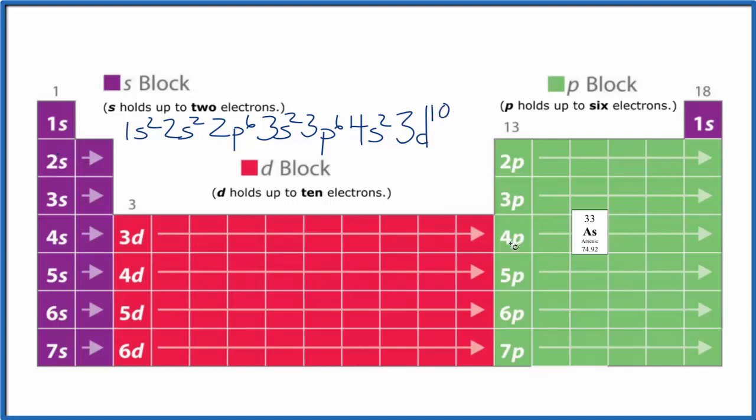We've used 30. We have 4p: 1, 2, 3. So 4p3, and that's arsenic. We've used all 33 electrons. If you add these numbers up, it'll equal 33.